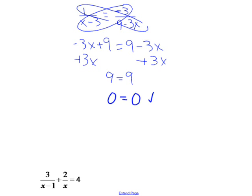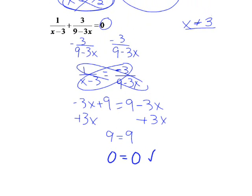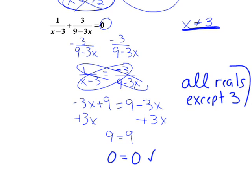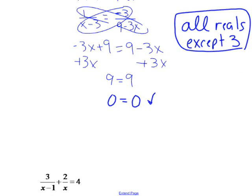Since that's a true statement, 0 does equal 0. This means that any number we plug in will work. However, we have a restriction of x can't equal 3. So our solution is going to be all reals except 3. So x can be all reals except 3.